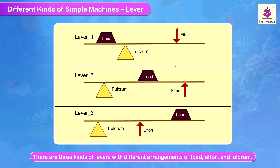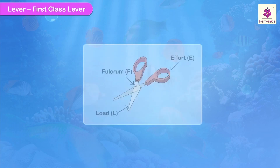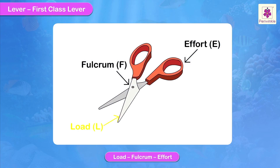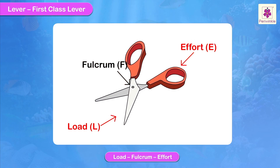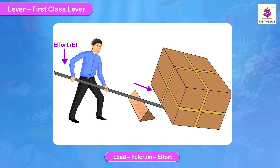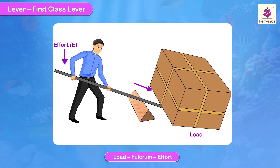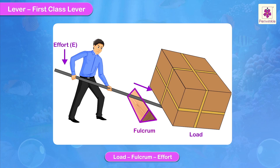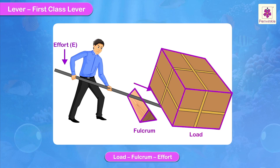There are three kinds of levers with different arrangements of load, effort, and fulcrum. In the first class lever, the effort put at one end of the rod is transferred to the other end, which is pushed under the load, and the work gets done. Here the fulcrum is between the load and the effort.